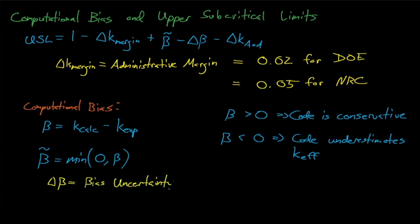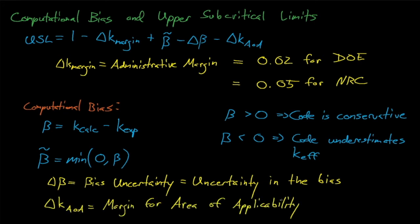After we add the negative bias to the USL, we must also subtract the bias uncertainty, which is the amount of uncertainty present in our statistically estimated bias prediction. We must also subtract some additional margin in case the critical experiments used in the USL and the bias calculation do not completely match the same area of applicability of the target application for which we are validating our code.